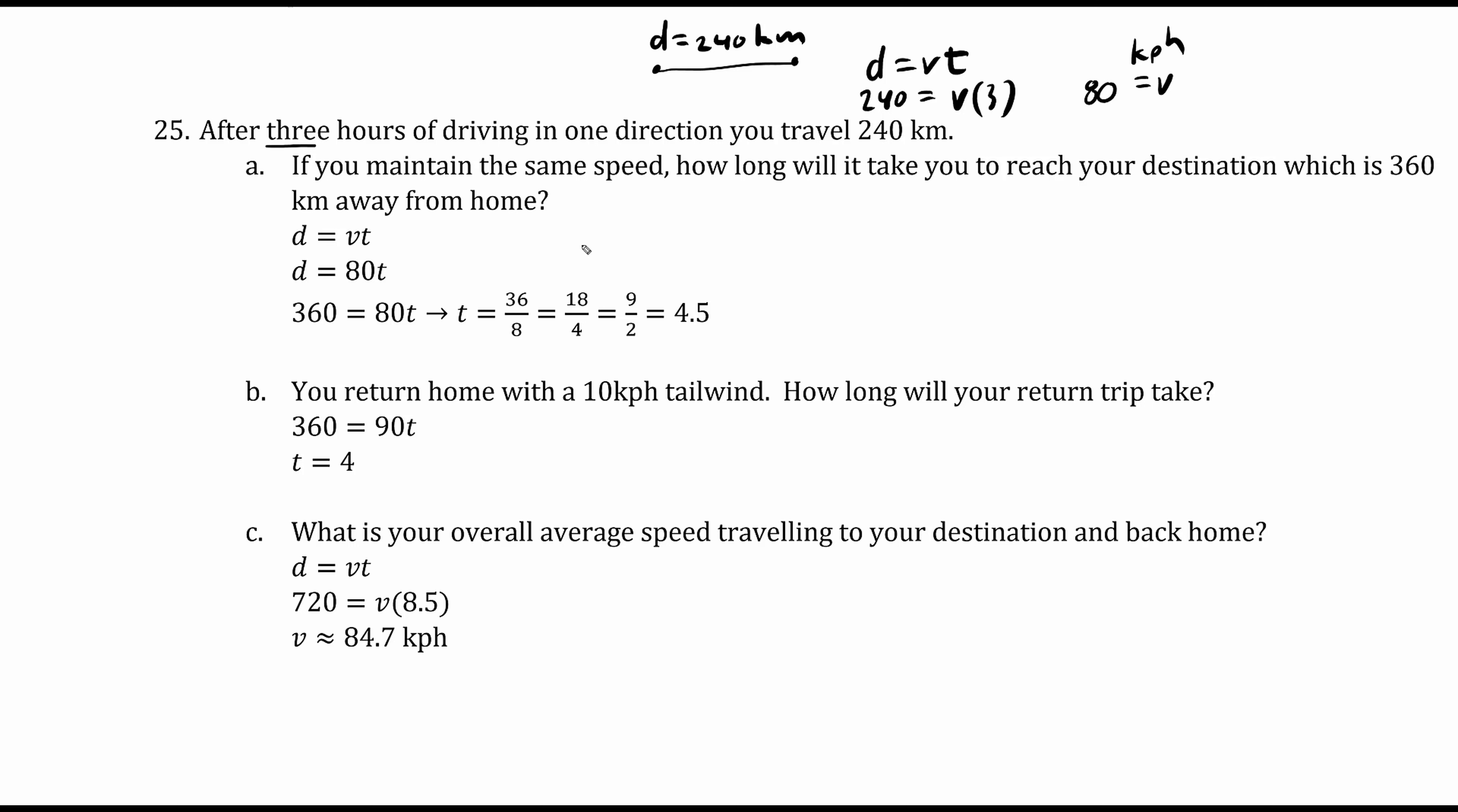If you maintain the same speed, 80 kilometers an hour, how long will it take to reach your destination which is 360 kilometers away from home? The distance is now 360 kilometers. Using distance equals velocity times time, the velocity is 80 and the time is unknown. Dividing both sides by 80, the time is 36 over 8 which is 9 over 2 or 4.5 hours.